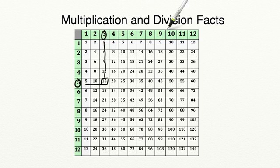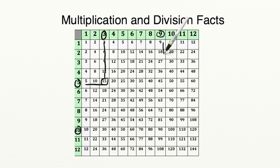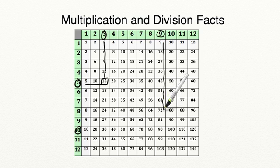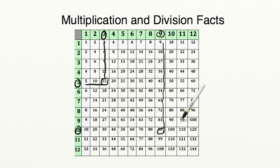Let's try another one. Can you tell me the product of 9 times 10? Let's skip count together: 9, 18, 27, 36, 45, 54, 63, 72, 81, 90. Now we're lined up with our 10, so the product of 9 times 10 equals 90. We can also say that 90 divided by 10 equals 9, or 90 divided by 9 equals 10.